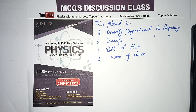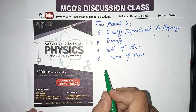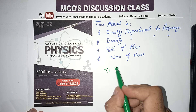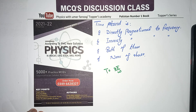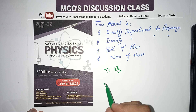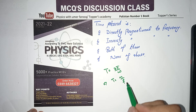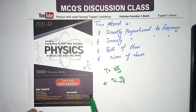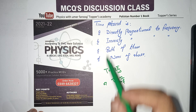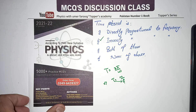Next MCQ: Time period is directly or inversely proportional to frequency? Time period T = 2π/ω, or in terms of linear frequency: T = 1/f. So T is inversely proportional to frequency. Therefore option B is correct.